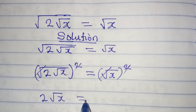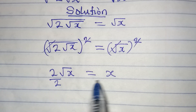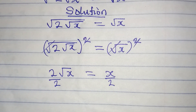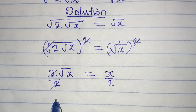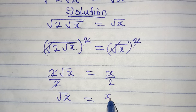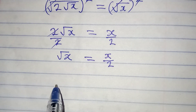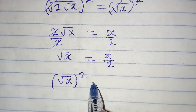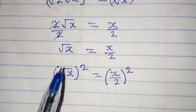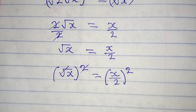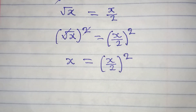So we have 2 square root of x equal to x. Next, I'll divide both sides by 2 — doing the same thing on both sides does not change the equation — giving square root of x equals x over 2. Now I'll square both sides again to remove the square root, so that the square root and square cancel, leaving x equals x over 2 squared.